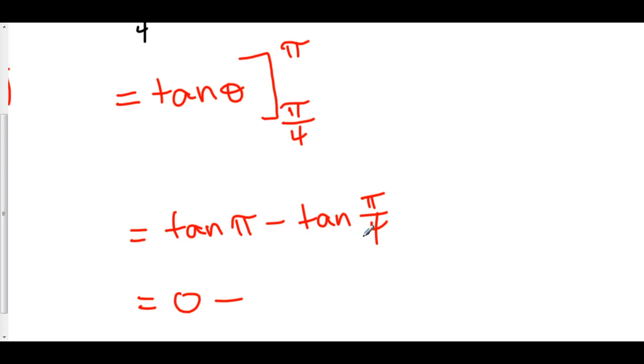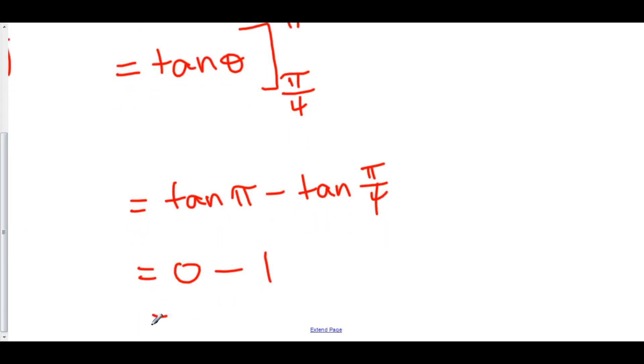Because sine of π/4 is root 2 over 2, and cosine of π/4 is root 2 over 2, and root 2 over 2 over root 2 over 2 is 1. So 0 minus 1 is equal to negative 1, and that is the answer for this particular problem.